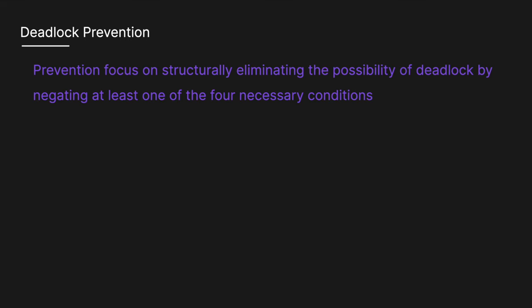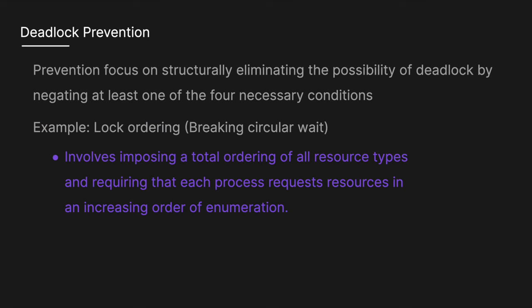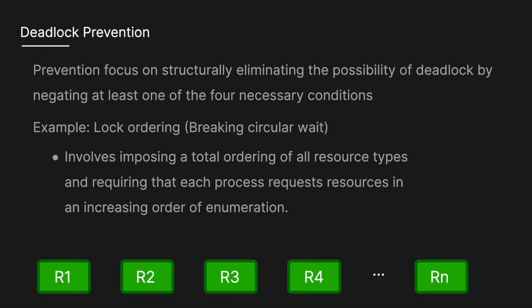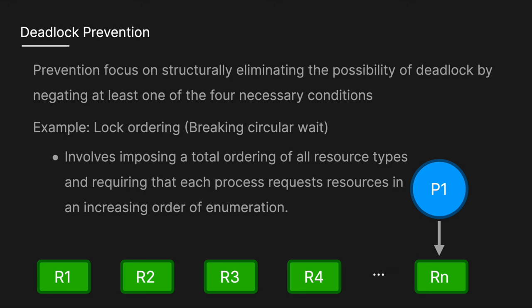Another key topic is deadlock prevention. Prevention focuses on structurally eliminating the possibility of deadlock by negating at least one of the four necessary conditions. An example is lock ordering, which breaks the circular wait condition. This involves imposing a total ordering of all resource types and requiring that each process requests resources in increasing order of enumeration — so if resources are labeled R1, R2, R3, R4 through Rn, a process must request R1 before R2, R2 before R3, and so on. This ordering prevents circular waits and is widely used in database and file systems.